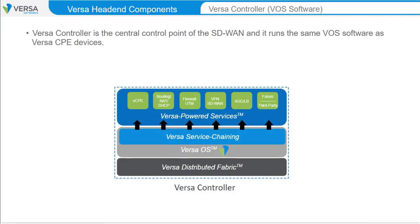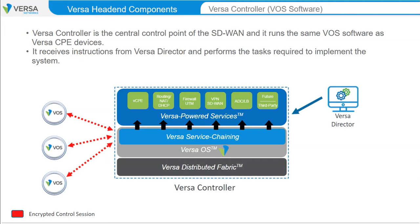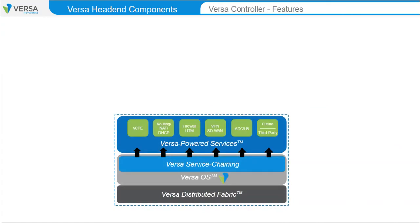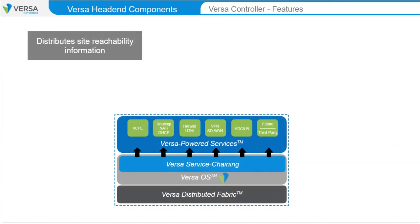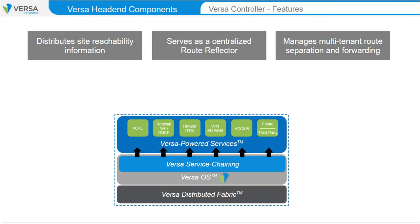Versa Controller is the central control point of the SD-WAN, and it runs the same VOS software as the Versa CPE devices. Versa Controller receives instructions from Versa Director and performs the tasks required to implement the system. Customer edge devices establish management and control channels to the Versa Controller to perform onboarding operations and to manage connectivity to remote sites. Versa Controller acts as a secure gateway between SD-WAN edge devices and the other head-end components of Versa Director and Versa Analytics. It is responsible for distributing site reachability information and serves as a centralized route reflector to distribute routing and forwarding information to all Versa CPE devices. It also manages multi-tenant route separation and forwarding.